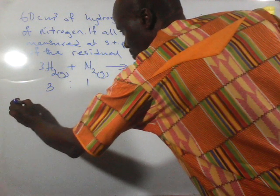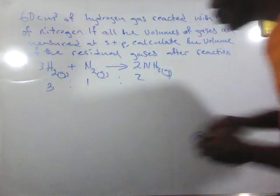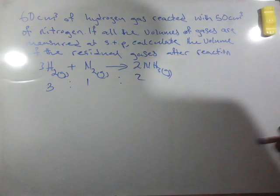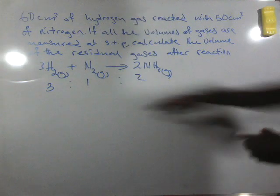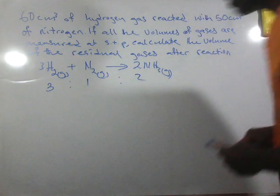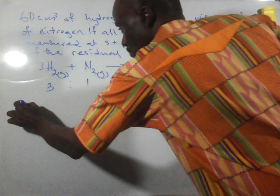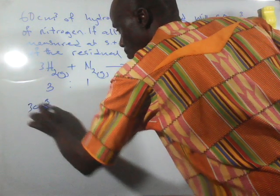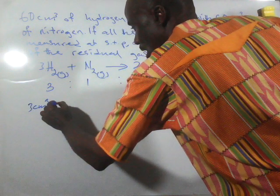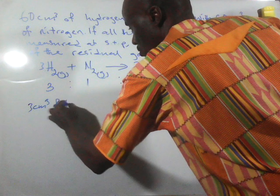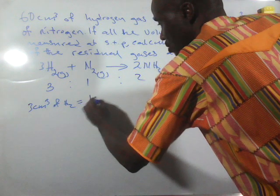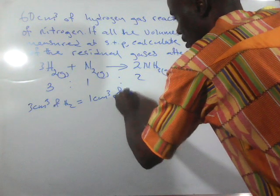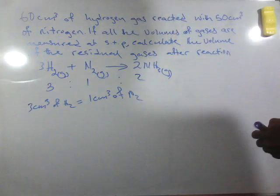From this, since we have a ratio of 3:1:2, it means that if we have a volume of 3 cm³ of hydrogen, we need 1 cm³ of nitrogen in the combination.